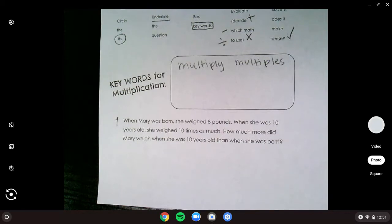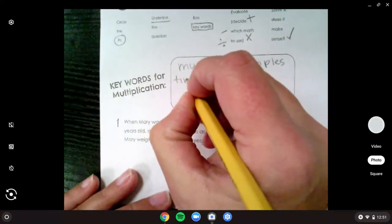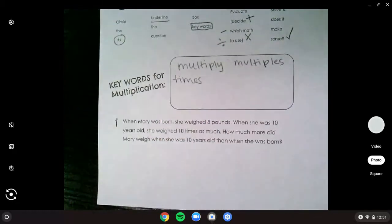Lizzie, what do you think another one is? Times. If we see the word times in the problem, right? Like we say three times six. So if we see the word times, that also means we need to multiply.